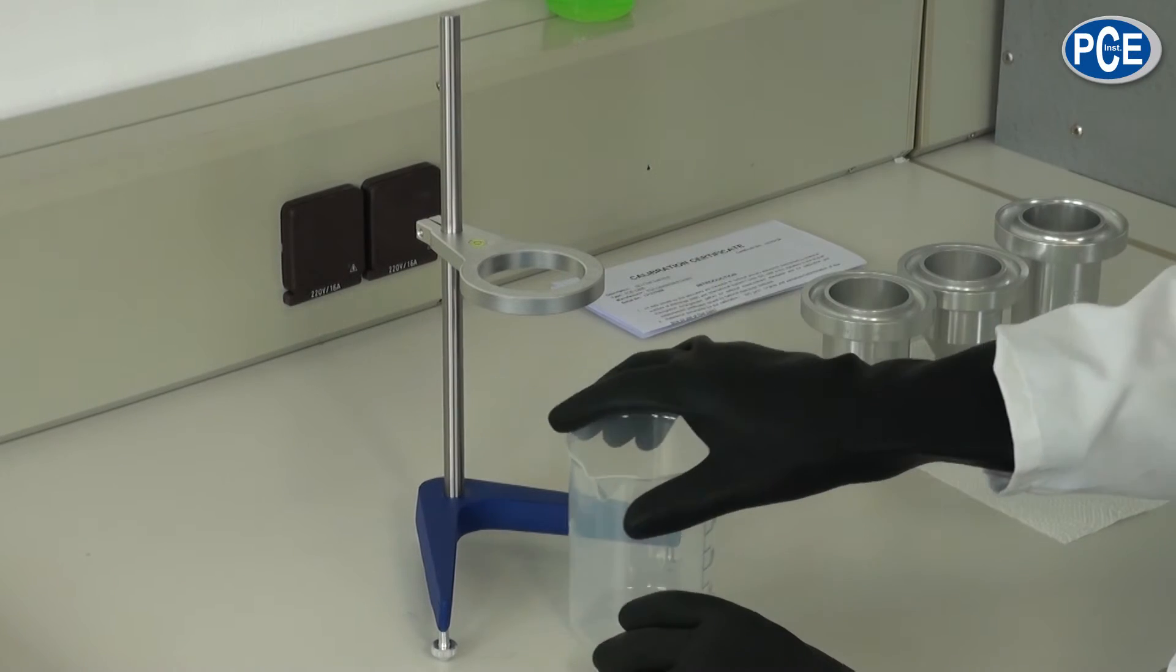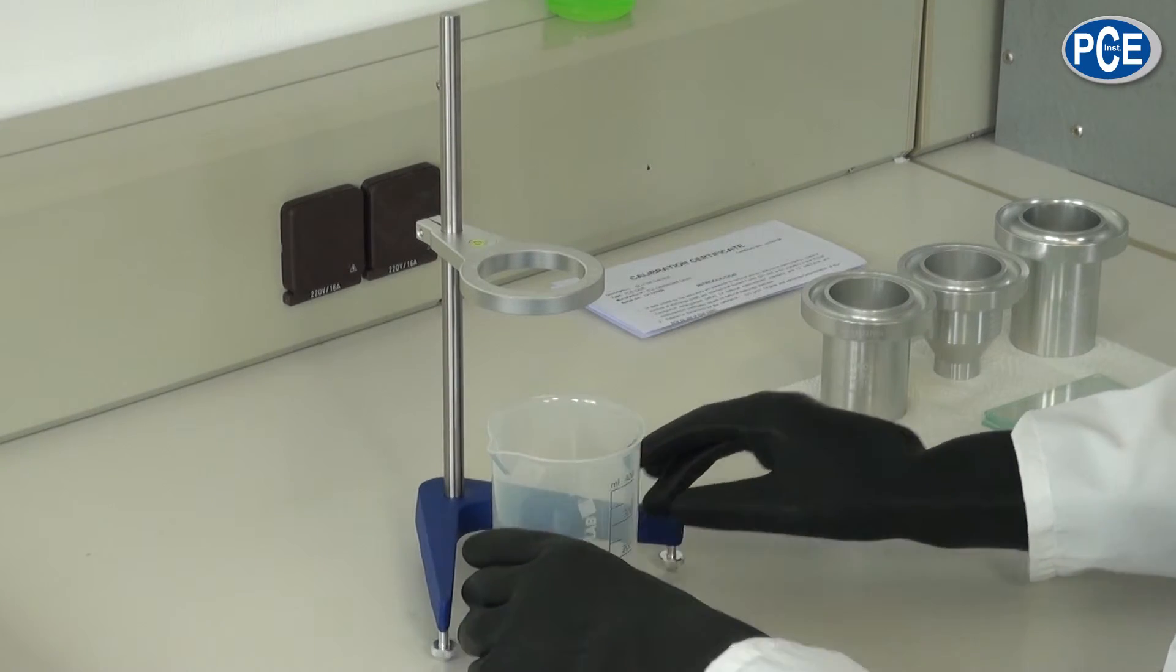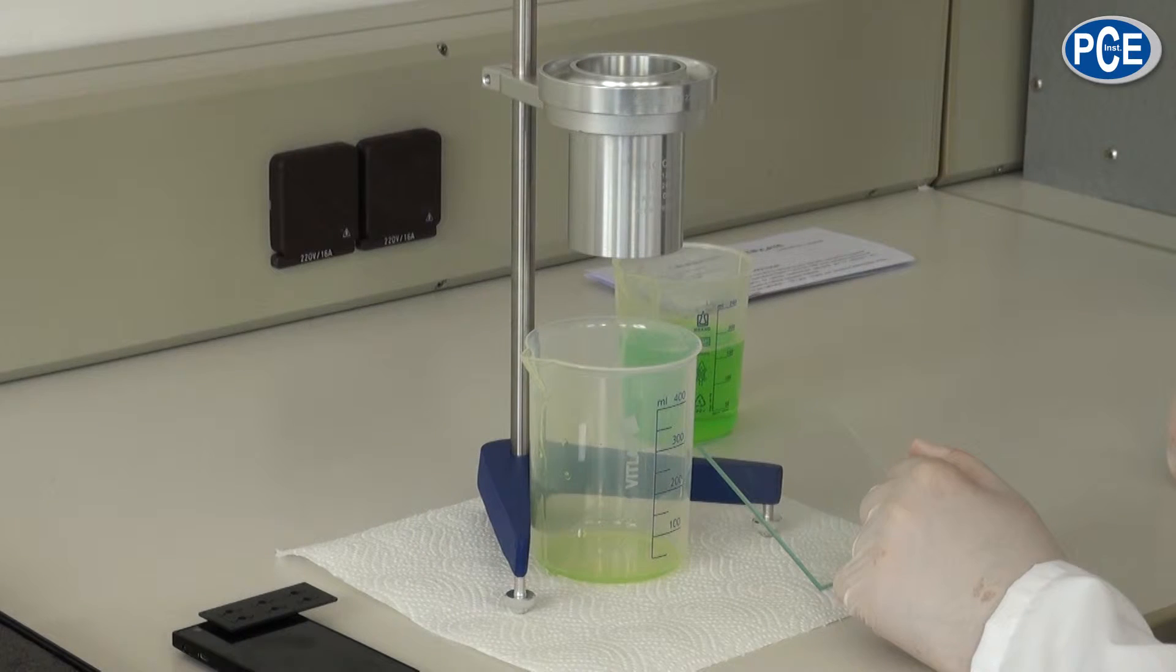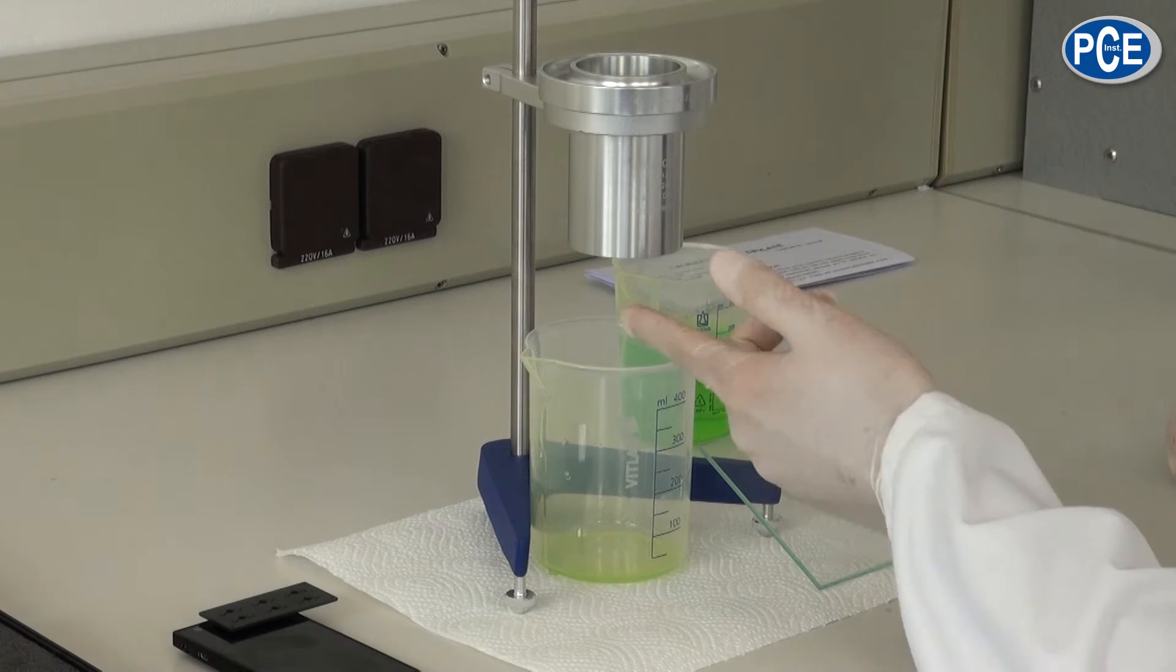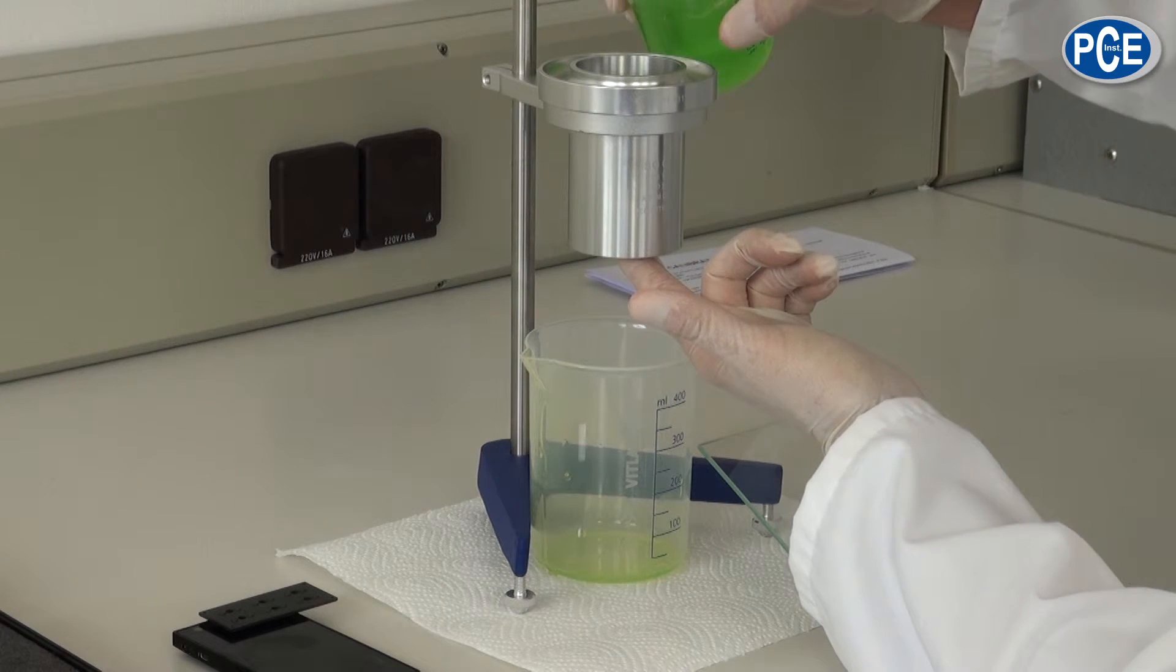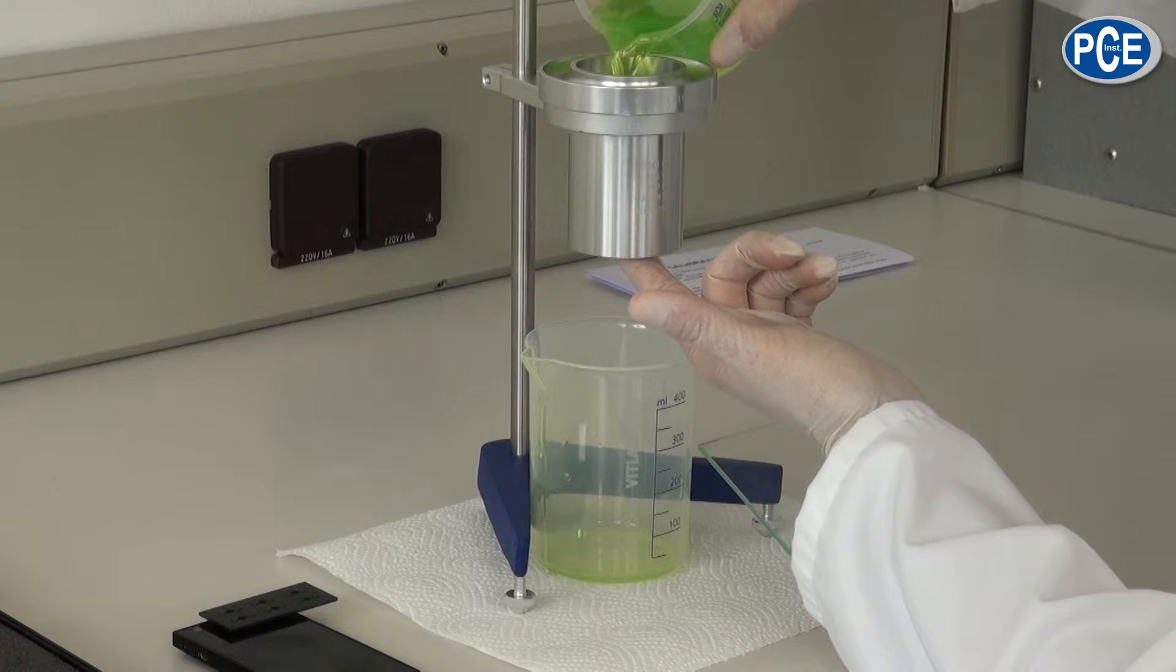To do a measurement you must go as follows. First of all, the overflow cup is placed into the stand holder. The outlet nozzle is closed with one finger, and the fluid to be examined is put bubble free into the cup.